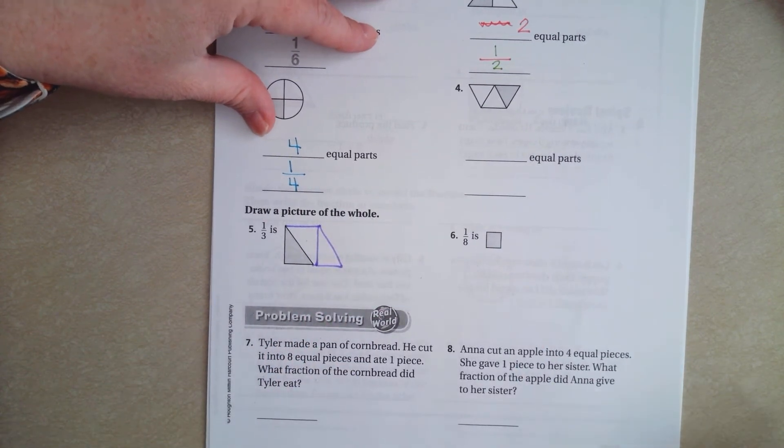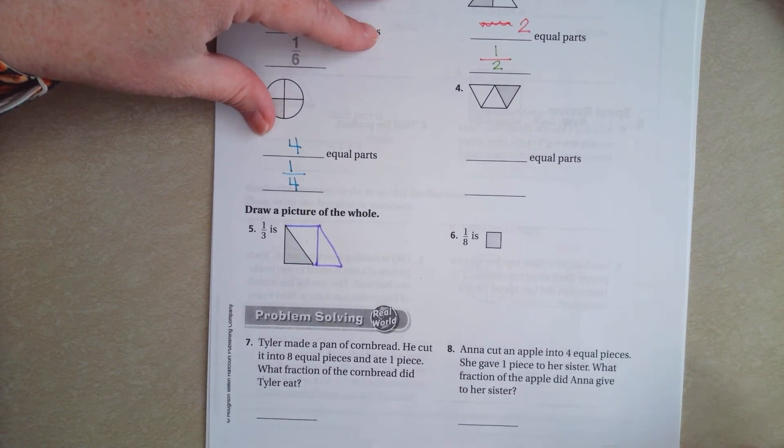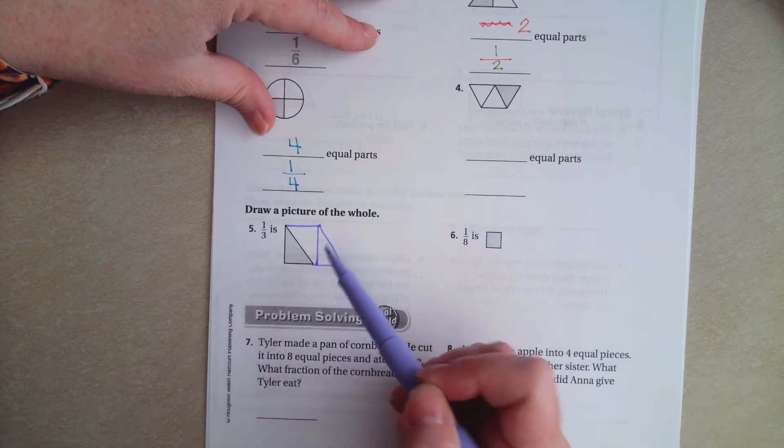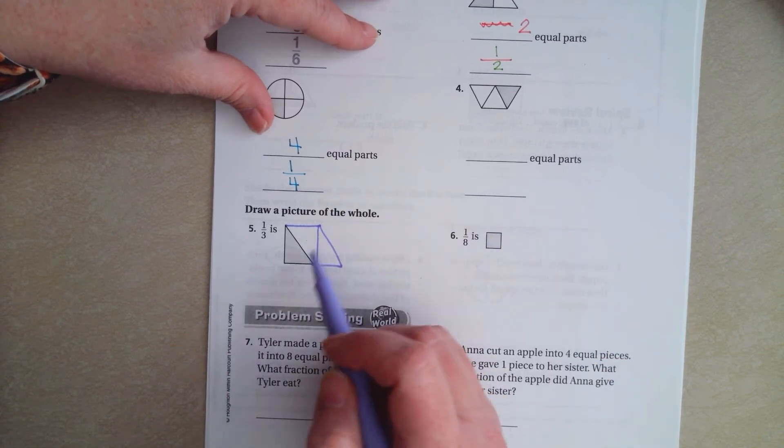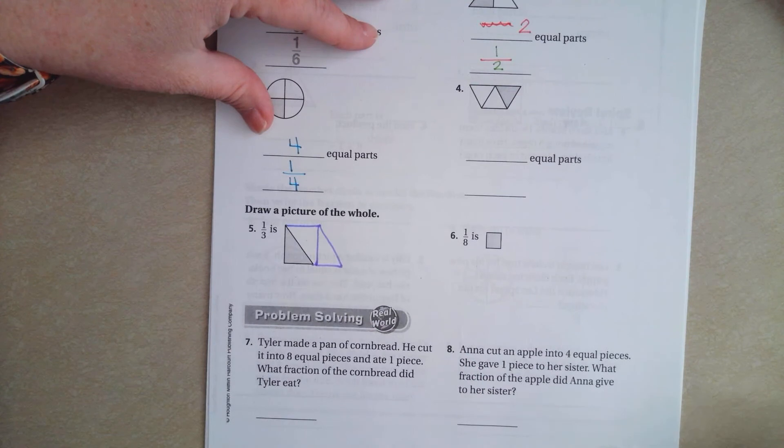Obviously, I am no artist. So, be patient with me. So, one-third. There's three roughly equal parts, because Miss Leah is not an artist. Three roughly equal parts, one of those parts is colored in. That is one-third.